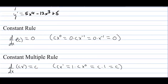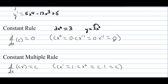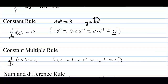The constant rule: the derivative of any constant is 0. For example, 3x to the 0 is the same as just having 3. If we take the derivative of 3x to the 0, that's like having a constant 3. 0 times 3 is 0, and 0 times anything is going to be 0. So if you have y equals 5, y prime is 0.